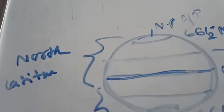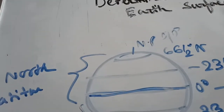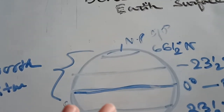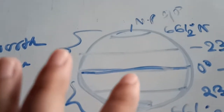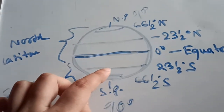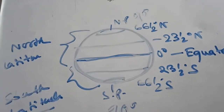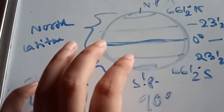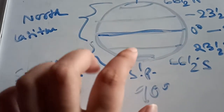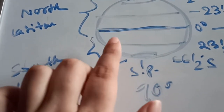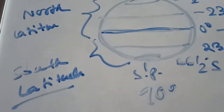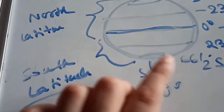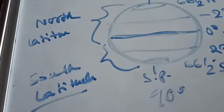The next important latitude is the Tropic of Capricorn, whose value is 23.5° south. It lies in the southern hemisphere. On 22nd December, the direct rays of the sun fall on this particular latitude, and the southern hemisphere has the summer solstice, whereas the winter solstice is present in the northern hemisphere.